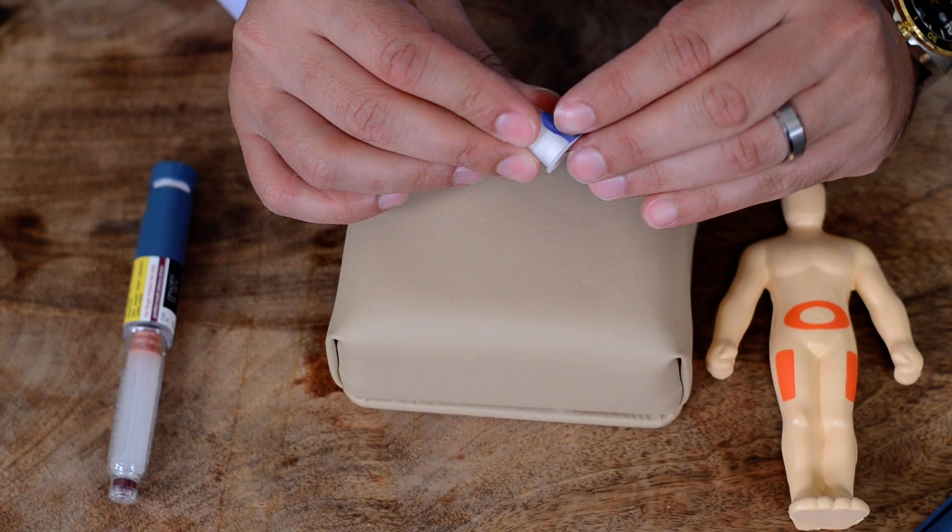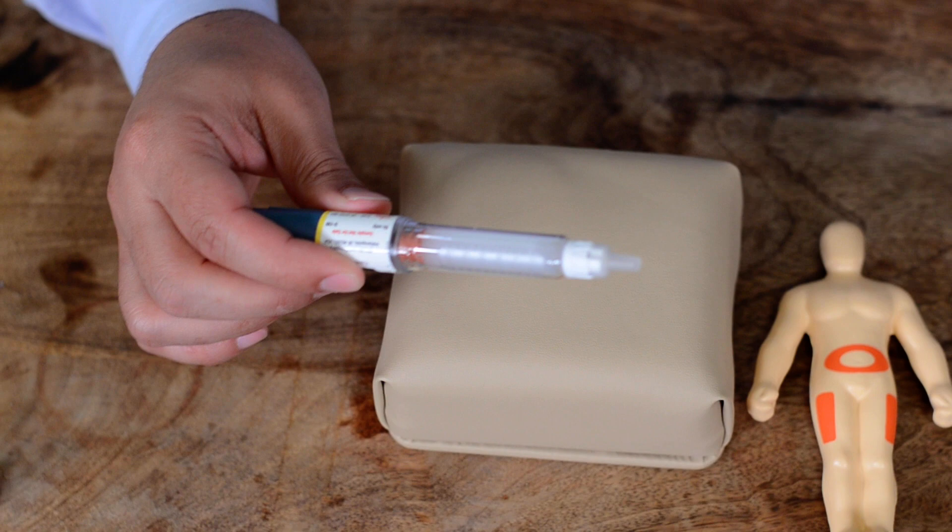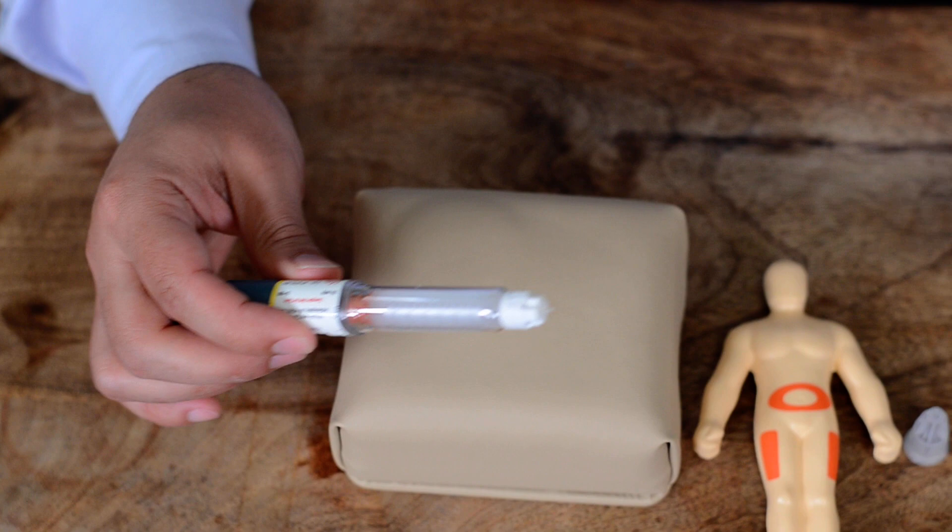Now, I am going to consider this is your abdomen and this is your pen needle. So you have to remove this seal and then simply screw that onto your pen just like this. And then you will remove the first cap and then you will see another cap. You have to remove that before you inject.